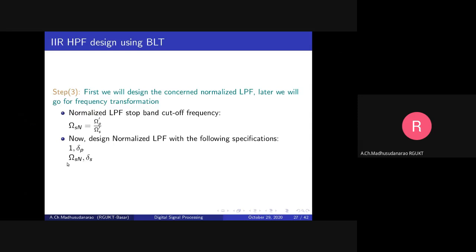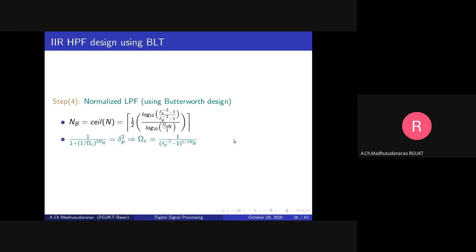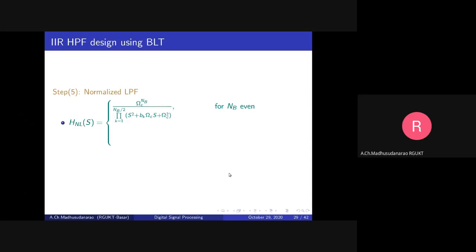The specifications for the normalized low pass filter are: 1, delta_p, omega_sn, delta_s. We will design the normalized low pass filter with the help of Butterworth filter design. Using the Butterworth formula, we can find the order n of the filter. Once we know n and the 3dB cutoff frequency omega_c, we can find the transfer function H(s) using the standard expressions.